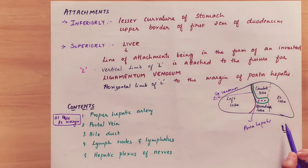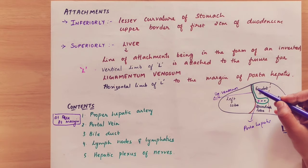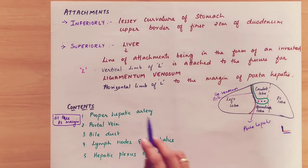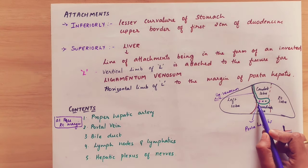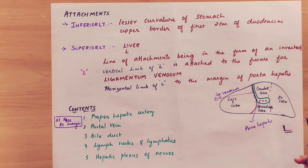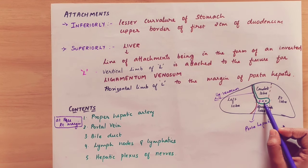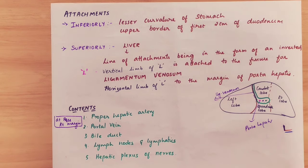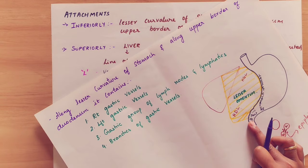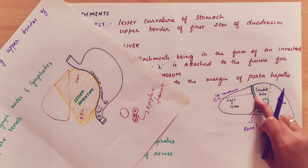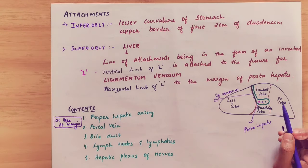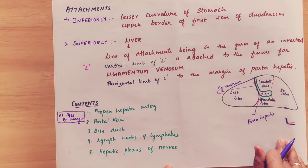The vertical limb is attached to the fissure for the ligamentum venosum. The horizontal limb of the L corresponds to the porta hepatis. The porta hepatis is the place where the artery, vein, and ducts enter the liver. These are the attachments of the lesser omentum.